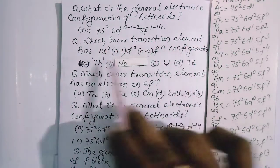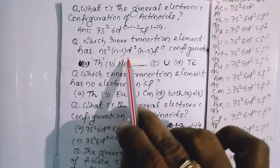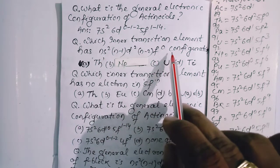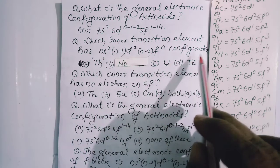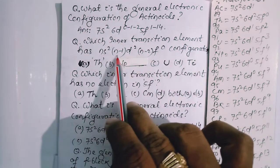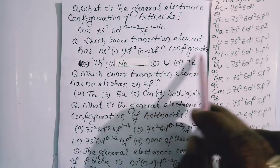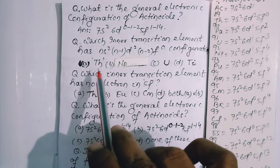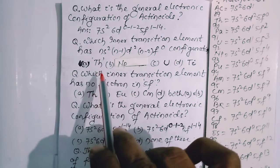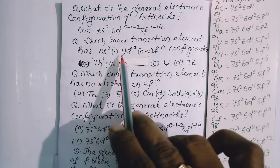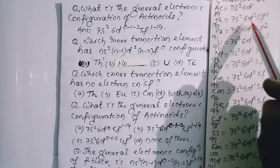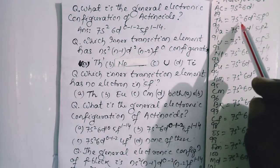Which inner transition element has ns² (n-1)d² (n-2)f⁰ configuration? Obviously, the answer will be Thorium because it has 6d² configuration, 5f⁰ and 7s².